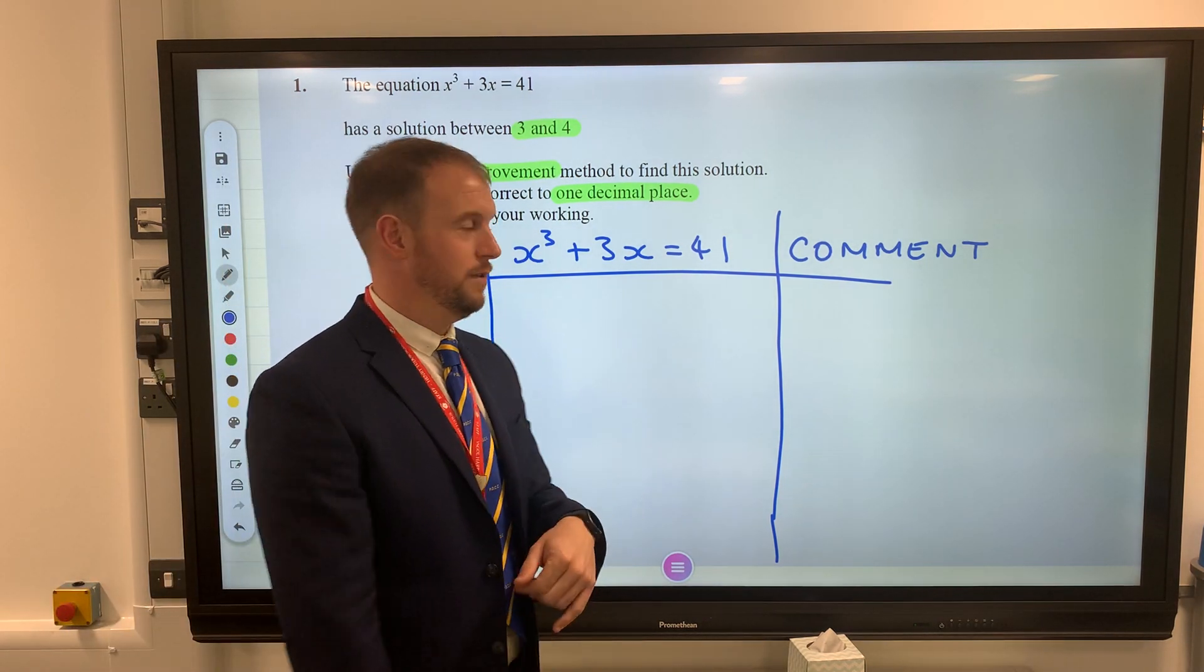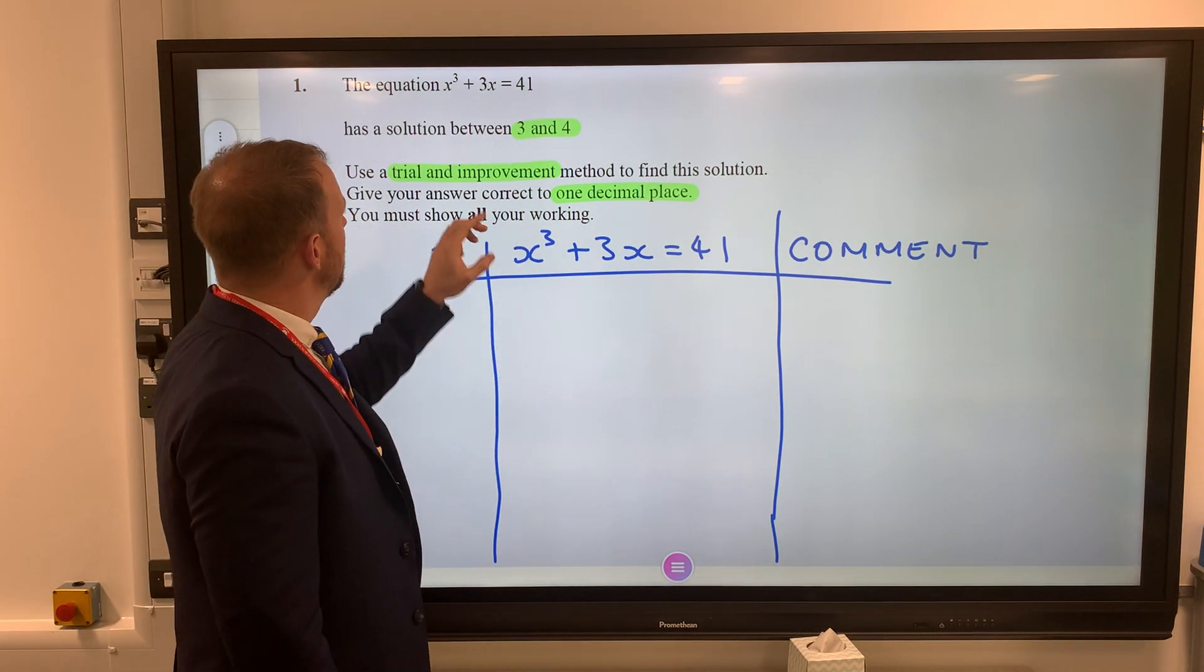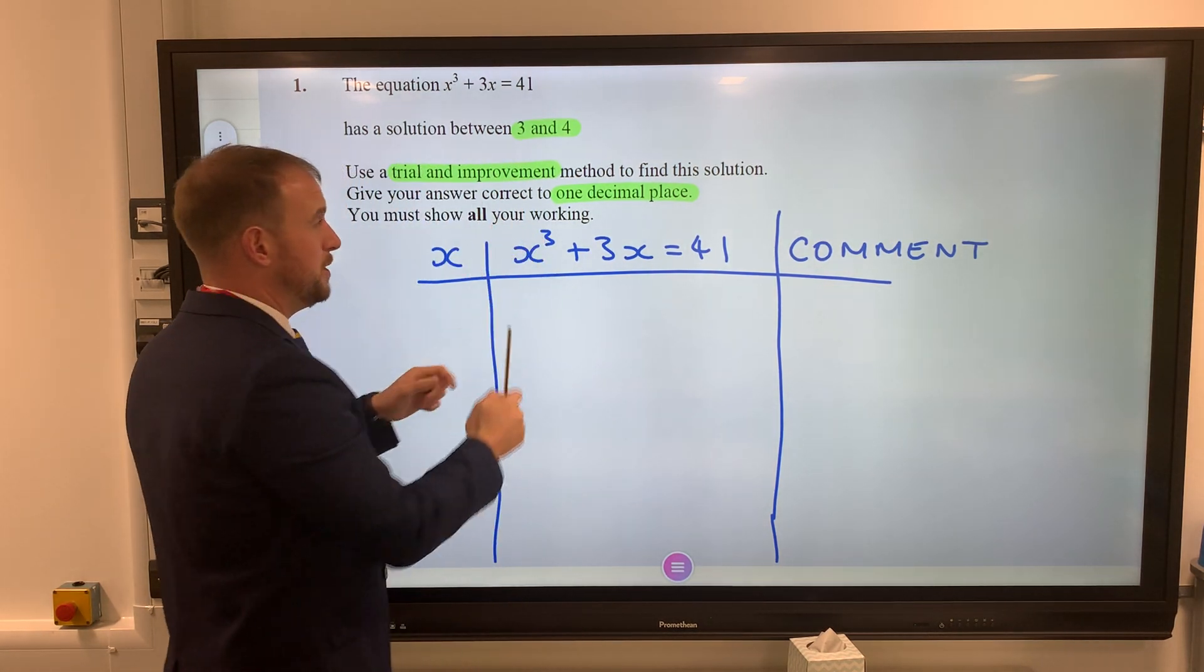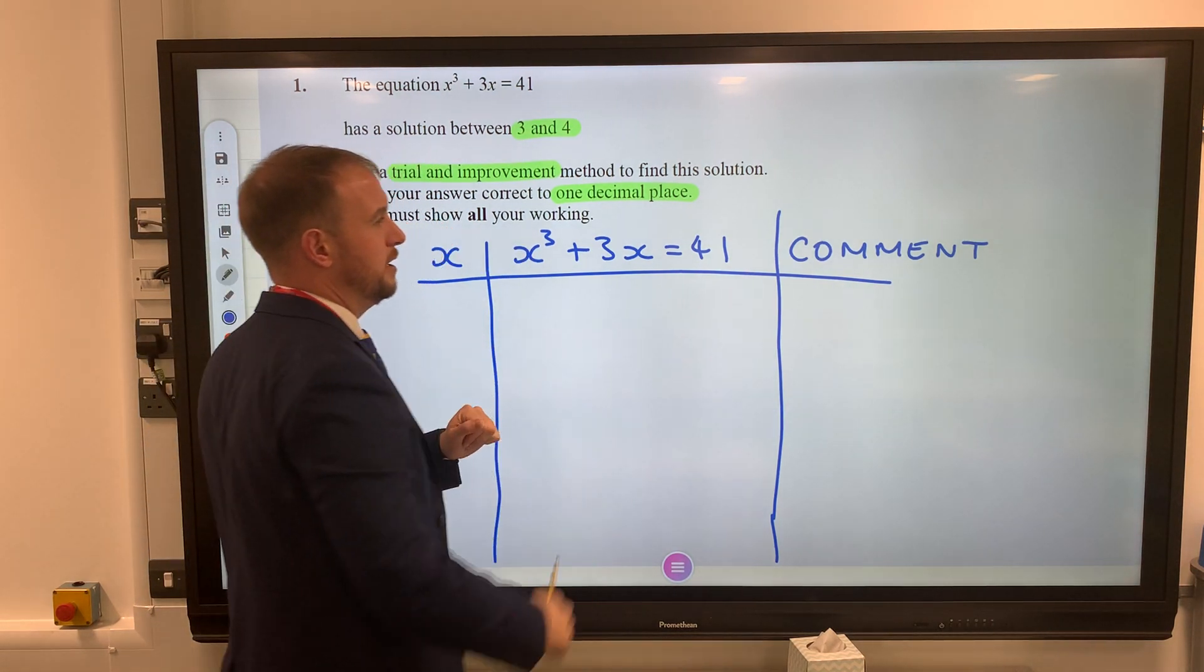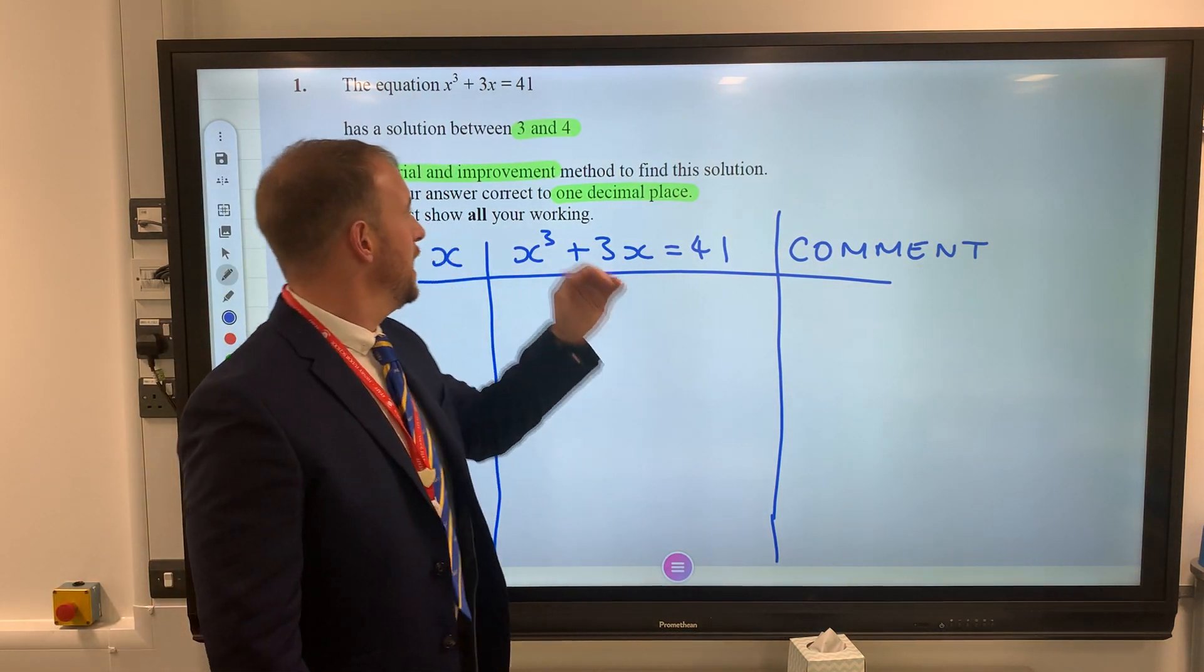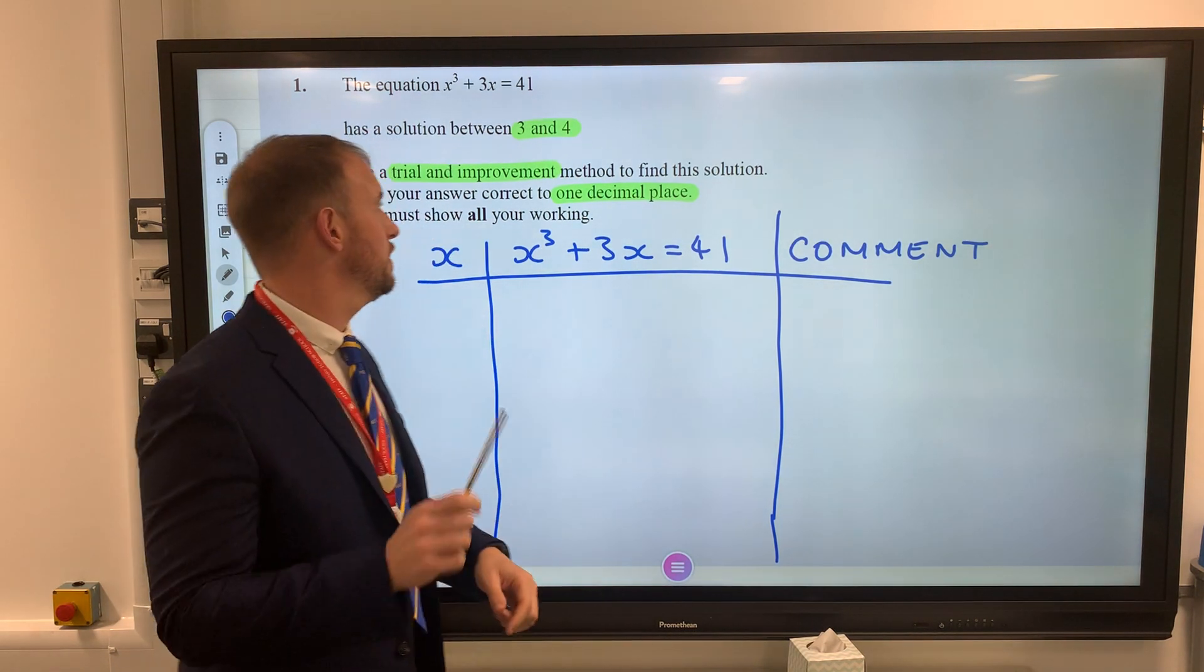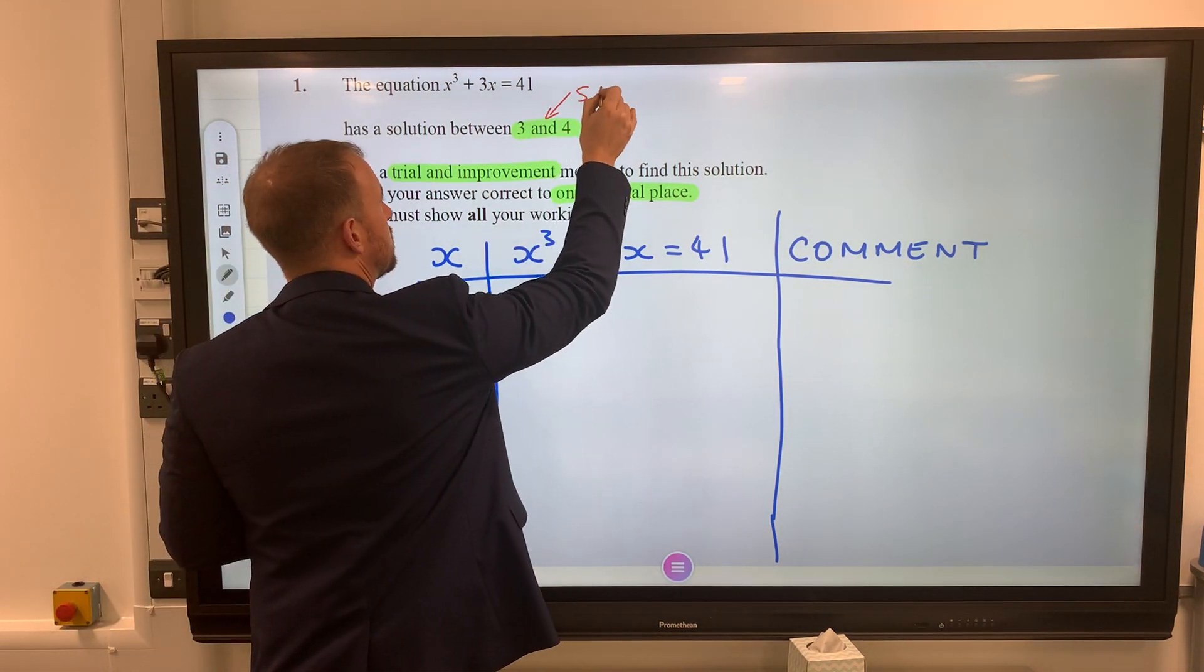The solution is between 3 and 4, so we know these are the x values. If we put 3 into this equation it'll be too small, and if we substitute 4 it'll be too big. So we're not going to look at 3 and 4 straight away. If it's between there, thank you very much Mr. Examiner, I'm going to use that to help me. I'm going to start with 3.5, which is midway between here.